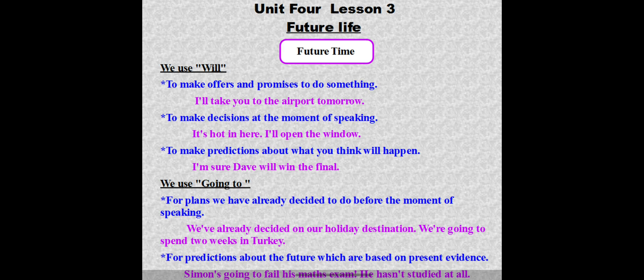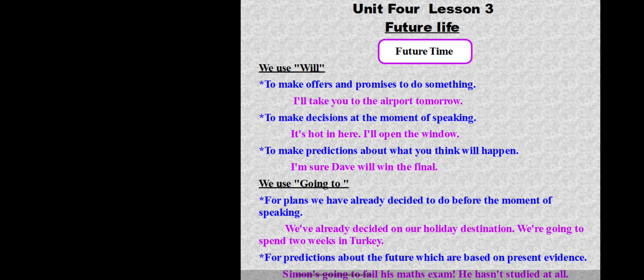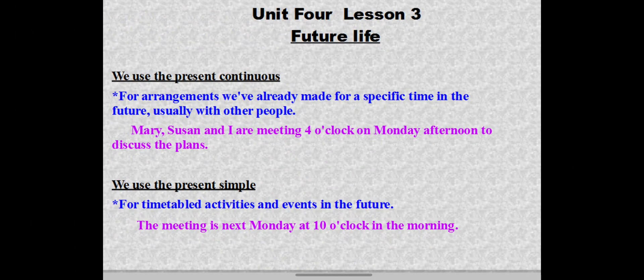We also use 'going to' for predictions based on present evidence: 'Someone's going to fail his math exam — he hasn't studied at all.' We can also use the present continuous to express the future for arrangements already made for a specific time, usually with other people: 'Mary, Susan and I are meeting at four o'clock on Monday afternoon to discuss the plan,' or 'I'm traveling next morning.'